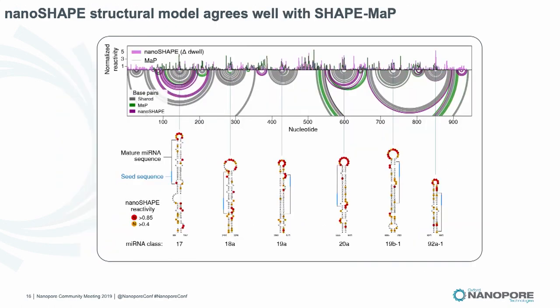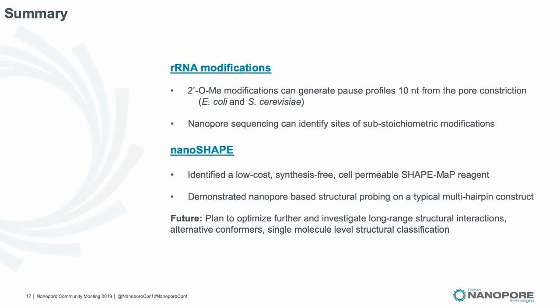We use these dwell times to reconstruct the RNA structure and compare them between our NanoSHAPE method and SHAPEMAP. The agreement is fairly good. In gray I'm showing shared contacts between the bulk SHAPEMAP and the nanopore data; contacts unique to mutational profiling are in green, and purple is for NanoSHAPE. The hairpin structures are fairly well formed, and we see high reactivity in the loop regions and in some of the internal bulges, as expected.